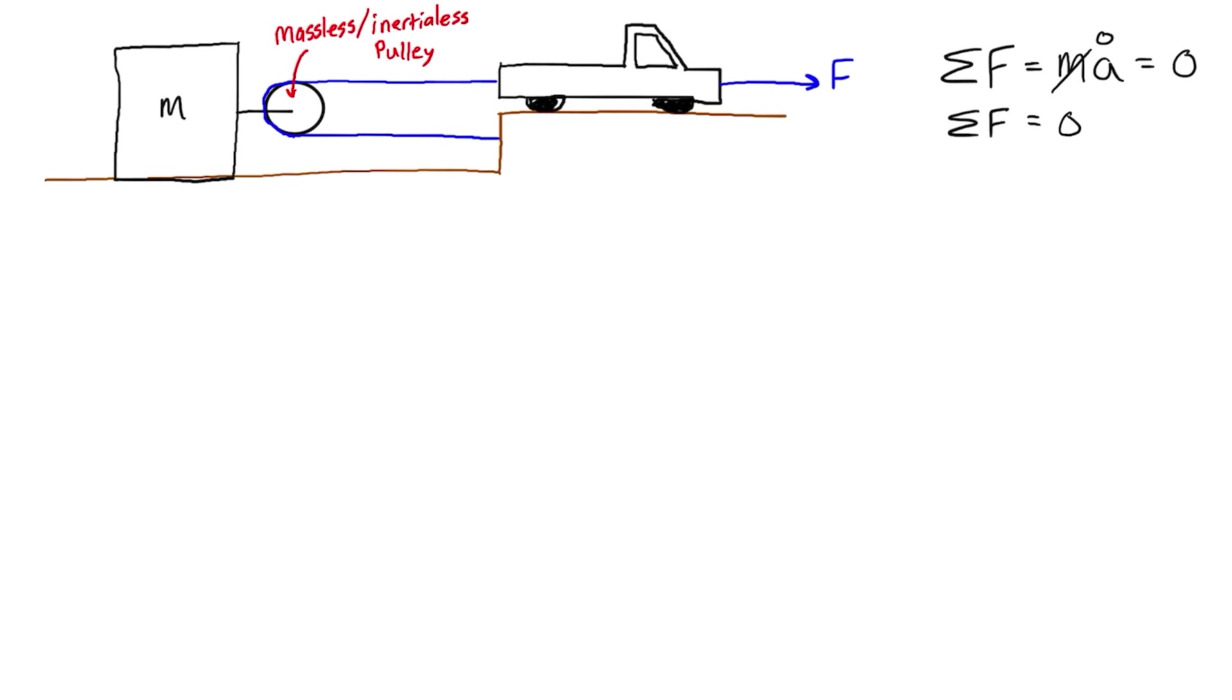In this case if we have a force of F pulling on the rope we have this tension equal to F here and then we also have F here. Another property of these inertialess pulleys is that the tension doesn't change on the cable on either side of it so this blue cable has a force of F pulling on each part of the pulley.